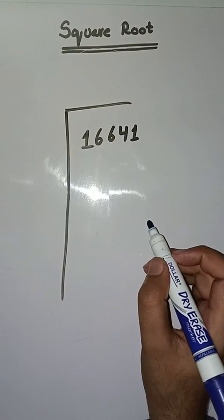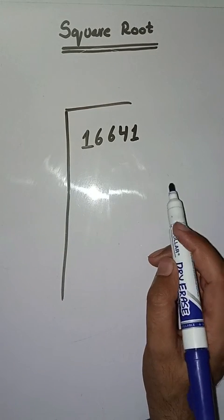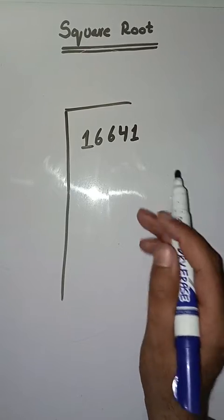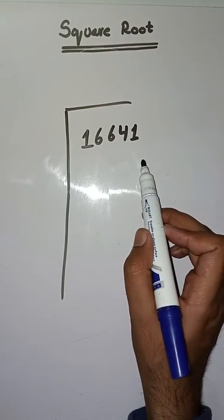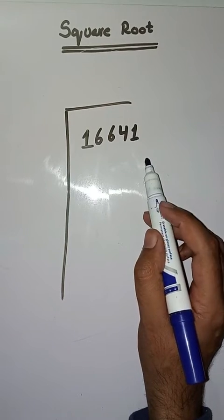Hello everyone, hope you are fine. Welcome to my channel students. Today we will learn how to find square root. We have to find square root of 16,641. So first step is we have to make pairs from right to left.